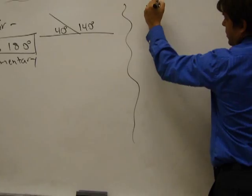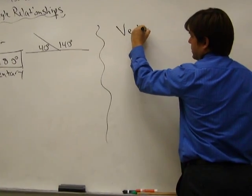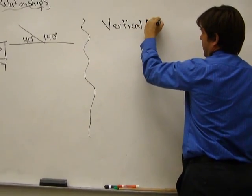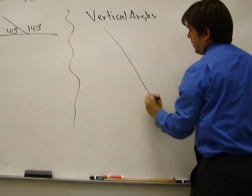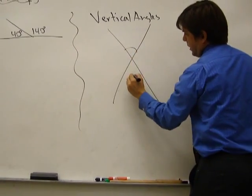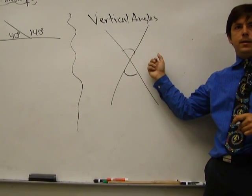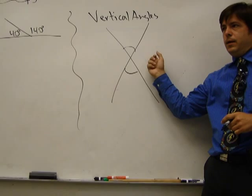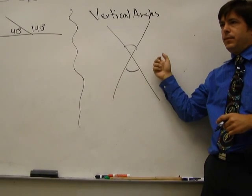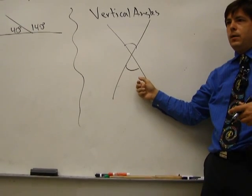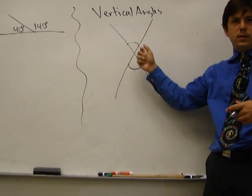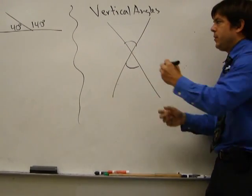Another one you may have already noticed is vertical angles. Vertical angles are angles that are across from each other. And if you think about it, if these two are a linear pair, they have to add up to 180. And if these two are a linear pair, they also have to add up to 180, which means whatever this one is, this one has to be the same. Let me prove it to you.